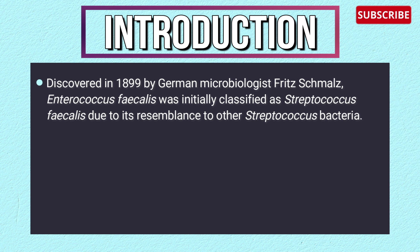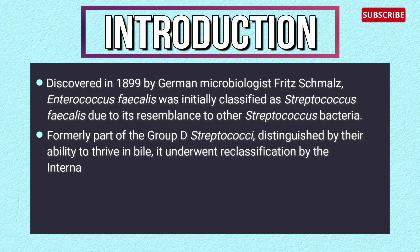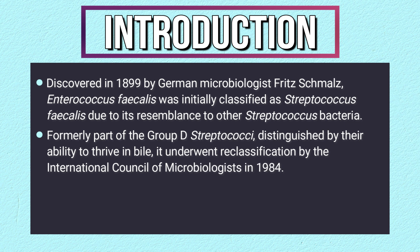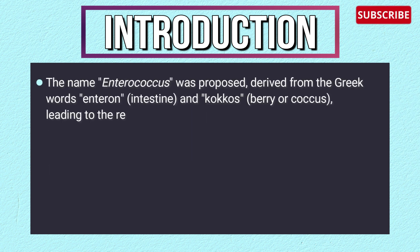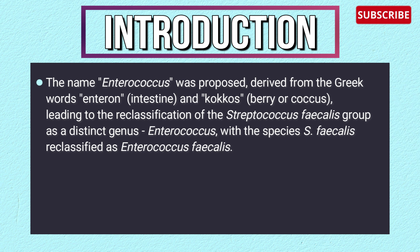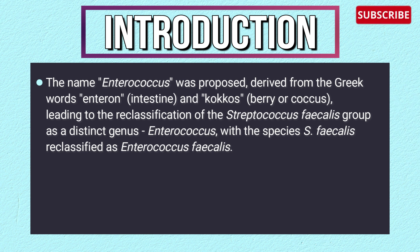Discovered in 1899 by German microbiologist Fritz Schaudinn, Enterococcus faecalis was initially classified as Streptococcus faecalis due to its resemblance to other Streptococcus bacteria. Formerly part of the group D streptococci, distinguished by its ability to thrive in bile, it underwent reclassification by the International Council of Microbiologists in 1984. The name Enterococcus was proposed, derived from the Greek words enteron (intestine) and coccus (berry), leading to its reclassification as a distinct genus.